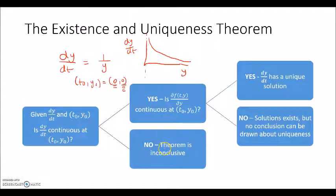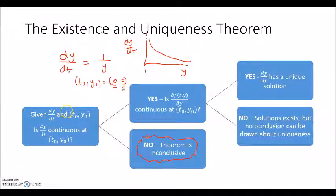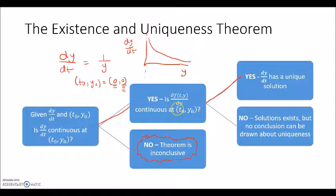That doesn't mean there doesn't exist a unique solution for that initial condition — it just means the theorem is inconclusive. In particular cases there may not be a solution or there may not be a unique solution, but at the very minimum this theorem guarantees we cannot conclude anything when the initial condition is at a point where the differential equation is not continuous. If it is continuous, we next check the partial derivative of dy/dt, and if that is also continuous, then we have established that a solution exists and is unique.